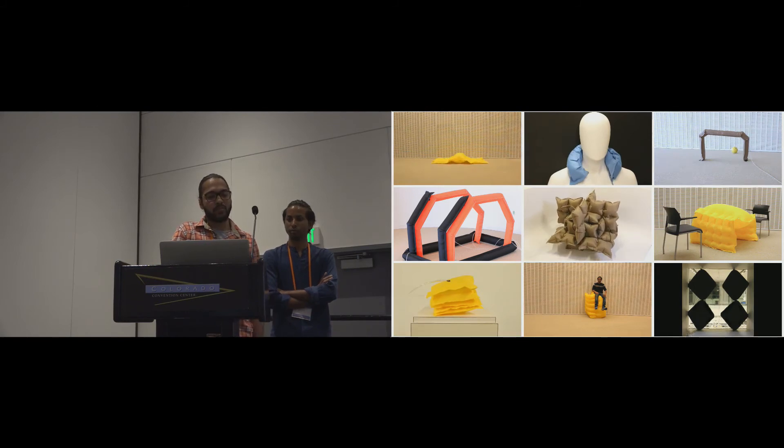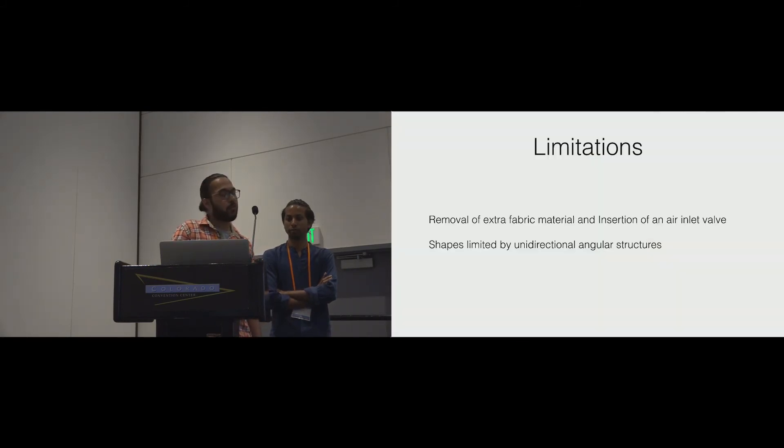The current limitations of the machine include removal of excess fabric after we fabricate an object. In addition, within the current scope of the machine implementation, structures with only unidirectional folding behavior have been implemented and are possible.